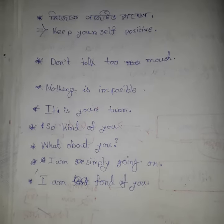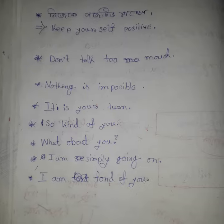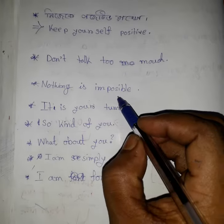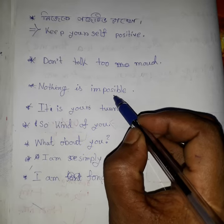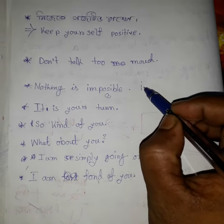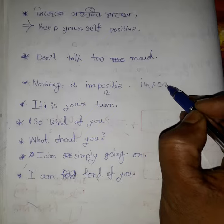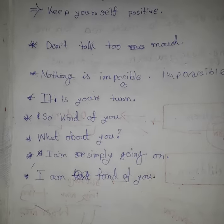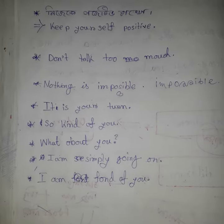Nije ke positive rakhu — Keep yourself positive. Next: don't talk too much — basic atha bolona. Nothing is impossible. The spelling: I-M-P-O-S-S-I-B-L-E — impossible. Nothing is impossible.